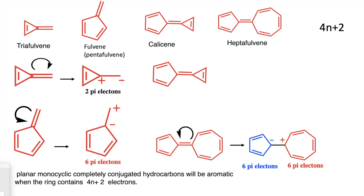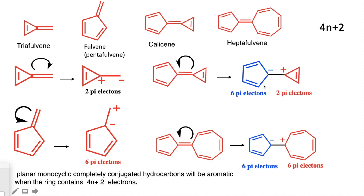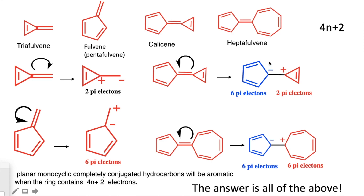For sesquifulvene, similarly, electrons move toward one end — creating a negative charge and a positive charge. This part becomes a ring with six pi electrons, and the other part retains two pi electrons. Both follow Huckel's rule of aromaticity, so both parts are aromatic. The answer to the question was 'all of the above,' and I'm very happy that most of you found the correct answer.